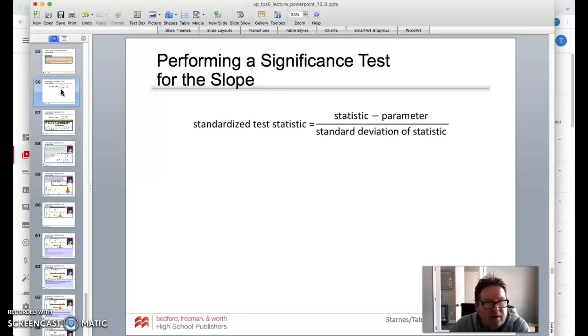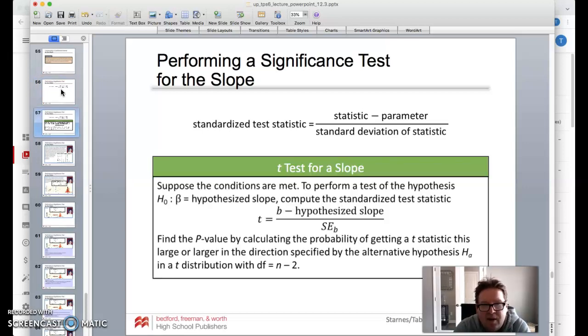And again, as we kind of look at our equation there, our standardized test statistic, remember just kind of a general formula, putting it into the t-test for a slope, remember that we'll kind of do it in this regard. So what we're going to do is we're really interested in finding that p-value by calculating a t-test that's either as large or larger in the direction specified by the alternative hypothesis. Could be less than, could be greater than that. And just remember that our degrees of freedom is n minus 2 in this case.